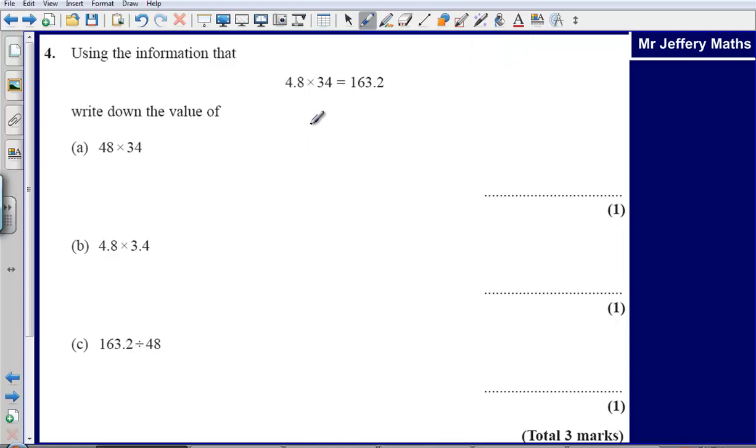This is question 4 from the 2008 non-calculator paper. Here we're told that using the information that 4.8 × 34 equals 163.2, write down the value of 48 × 34.